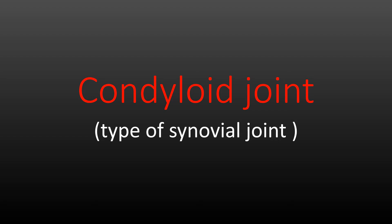Assalamu alaikum guys and welcome to my YouTube channel Biology Articles and MCQs. Today we are going to start a new topic — the condyloid joint, which is a main type of synovial joint. You know that there are total six types of synovial joint. If you have not studied the other types of synovial joint, I will give the link in the description box.